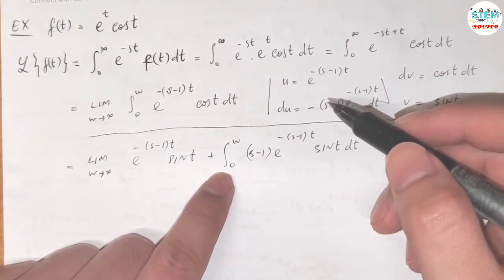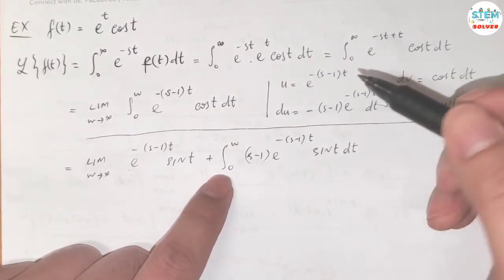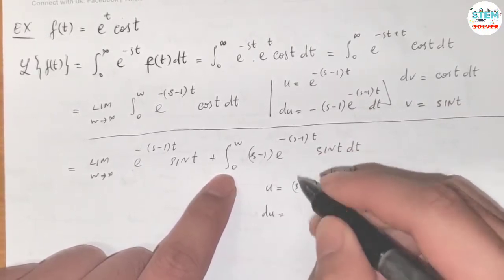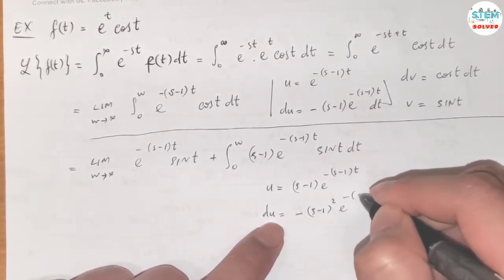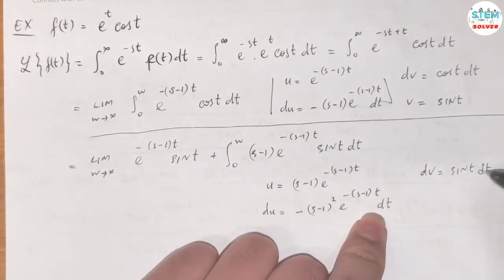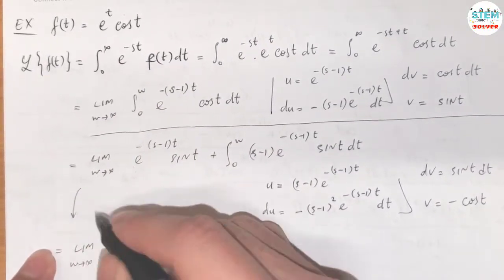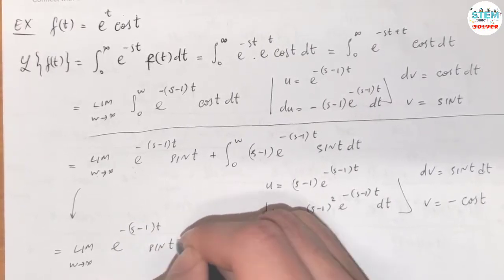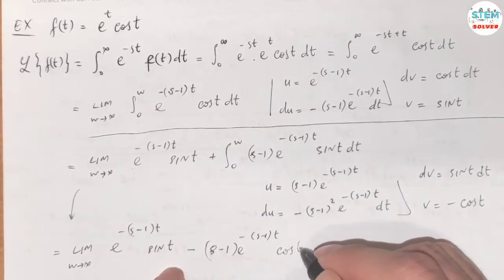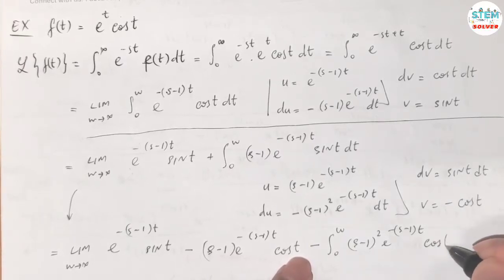We still have an integral, so we are going to apply integration by parts again. Let u = (s-1) · e^(-(s-1)t). Then du = -(s-1)² · e^(-(s-1)t) dt. Let dv = sin(t) dt, then v = -cos(t). Applying integration by parts again gives: the limit as w goes to infinity of e^(-(s-1)t) · cos(t), minus the integral of e^(-(s-1)t) · cos(t) dt.